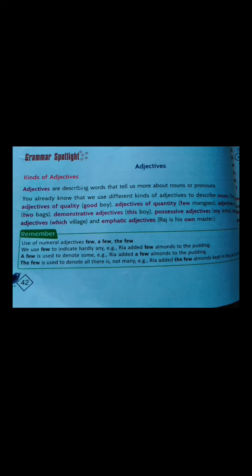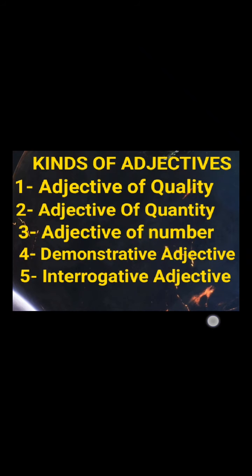The five kinds of adjectives are: adjective of quality, adjective of quantity, adjective of number, demonstrative adjective, and interrogative adjective. We will study about all these adjectives one by one.